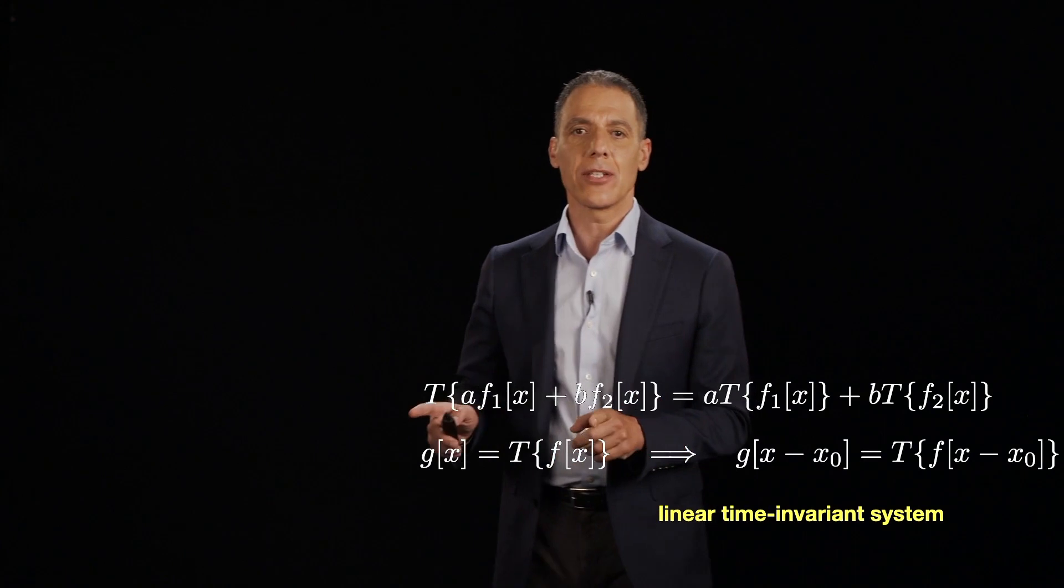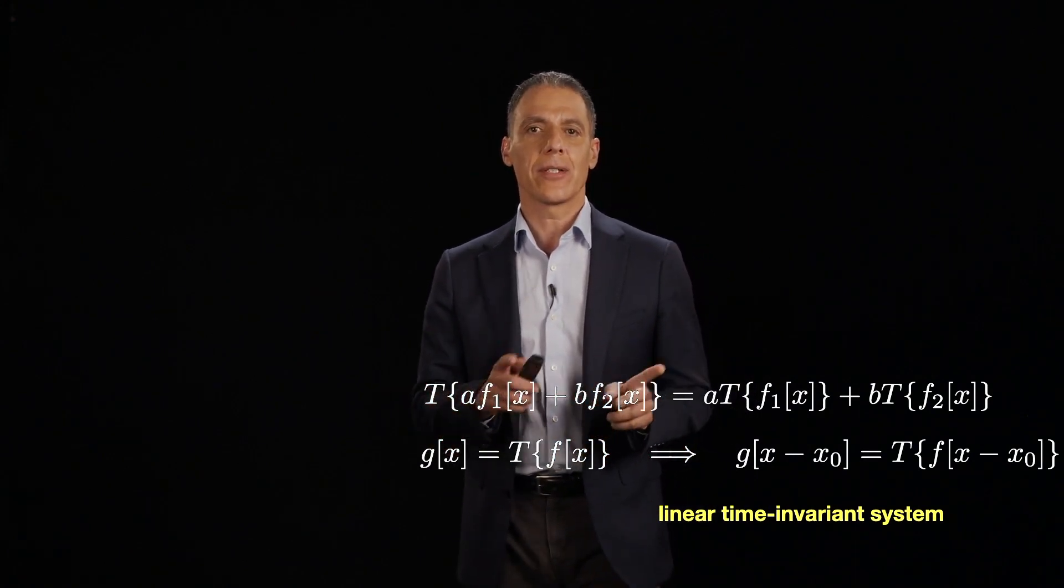Discrete time systems are something that take as input a discrete time signal and outputs another one. There's one very special type of discrete time system that we must talk about, and that is the so-called linear time invariant systems.